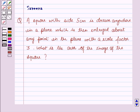Hello all and welcome to the session. Today the question is: a square with side 5 cm is drawn anywhere in a plane which is then enlarged about any point in the plane with a scale factor 3. What is the area of the image of the square?